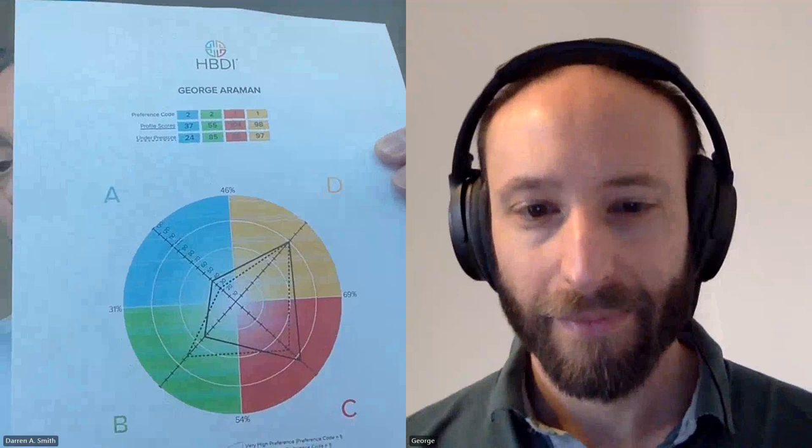Hi, you're at the home of the world's stickiest learning. My name is Darren Smith and this is George Araman. This is the third in our series of podcasts. The title is: I really don't know how to manage conflict at work — use HBDI to manage conflict at work. George has kindly allowed us to share his HBDI, Herman Brain Dominance Instrument Profile.